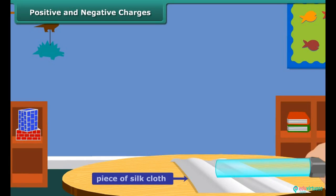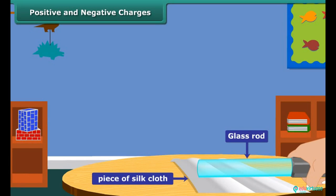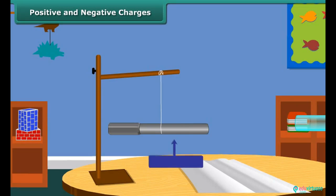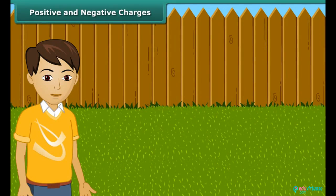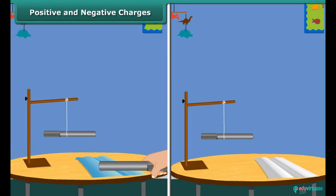Now take a glass rod and rub it with a silk cloth. Bring this glass rod close to the charged suspended ebonite rod. What do you observe now? The suspended ebonite rod comes closer to the glass rod. The charges produced in the ebonite and the glass are different in nature.